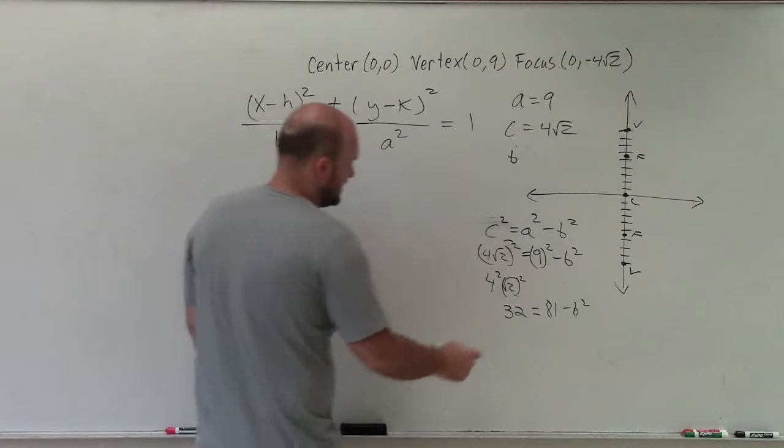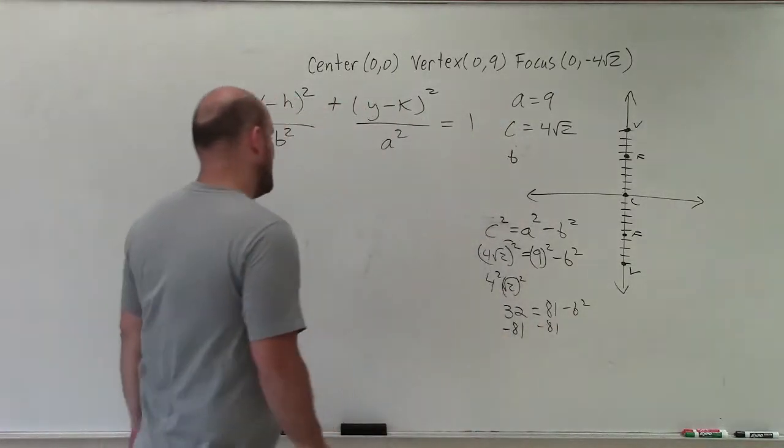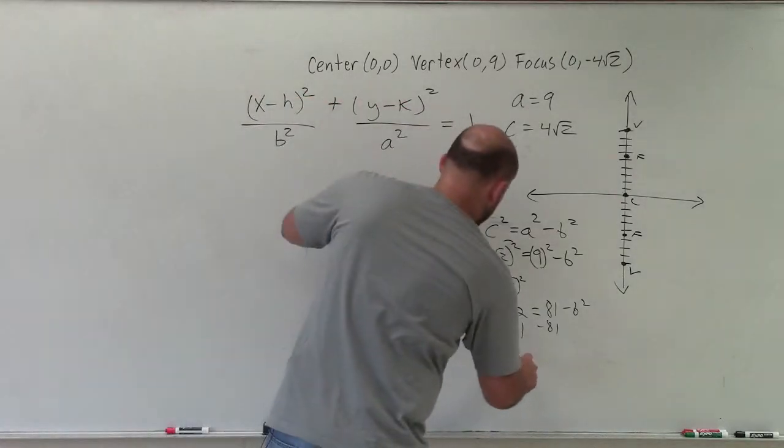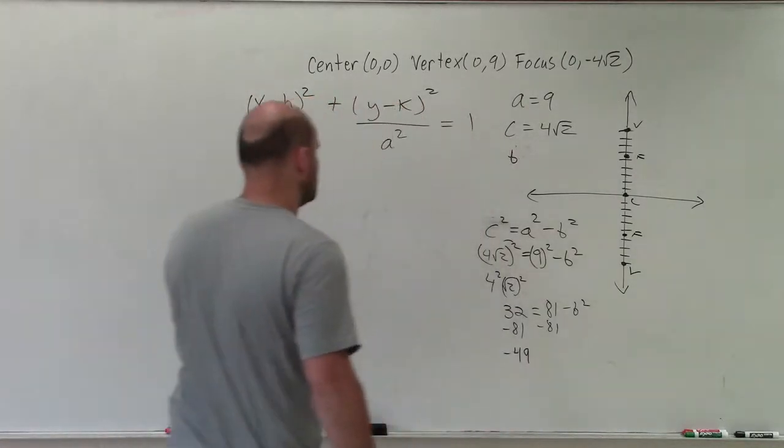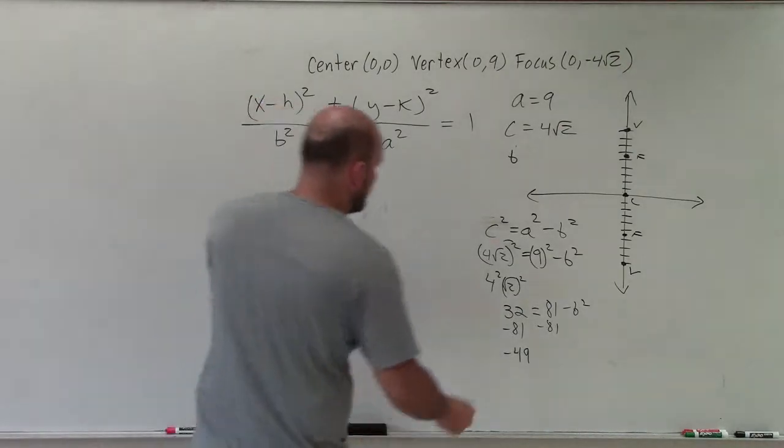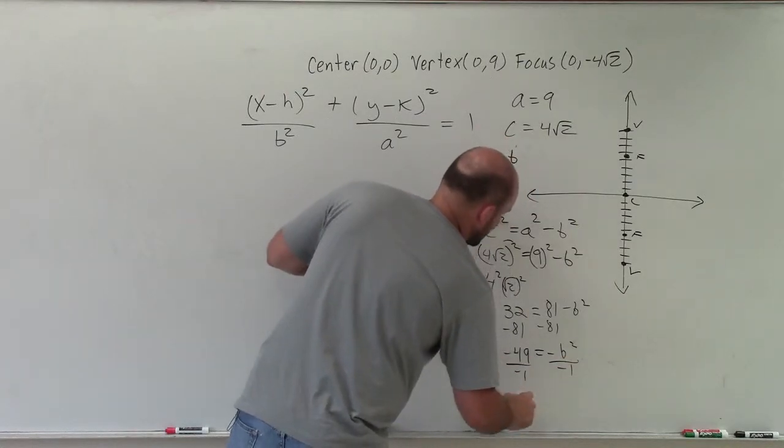Now I need to subtract 81. And let's see. I should have -49 equals -b². Divide by negative 1, divide by negative 1.